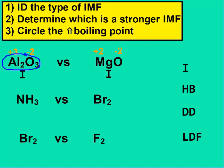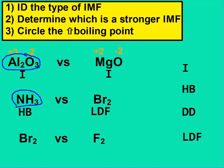NH3 is polar, and since it's polar, it's either hydrogen or dipole-dipole. We have hydrogen attached to N, O, or F, so it's hydrogen bonded. Br2 has one bond between the same elements, therefore it's nonpolar — all diatomics are always nonpolar, so that's LDF. Out of hydrogen bonds and LDF, hydrogen is stronger, so NH3 has the higher boiling point.